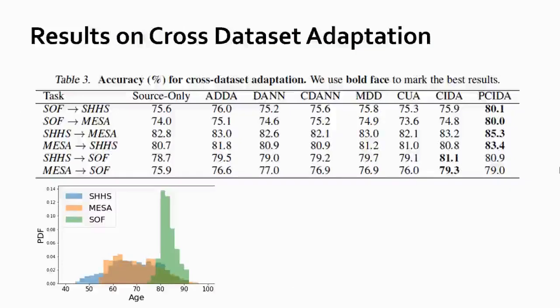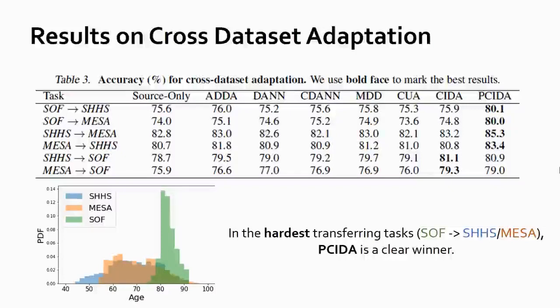We observe similar results in the cross-dataset settings. As shown in the figure, three datasets have different age distributions. Note that SOF contains only very old patients. Therefore, it's difficult to transfer from SOF to the other datasets with a much wider age range. Interestingly, P-CIDA provides significant improvement on the performance.